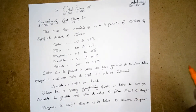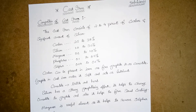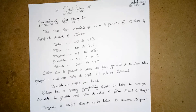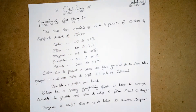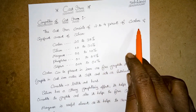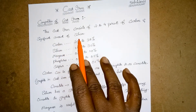So this is cast iron. First we will see the composition of cast iron. We have already discussed cast iron in our iron-carbon equilibrium diagram in our previous classes. Now we will start with the composition of cast iron.